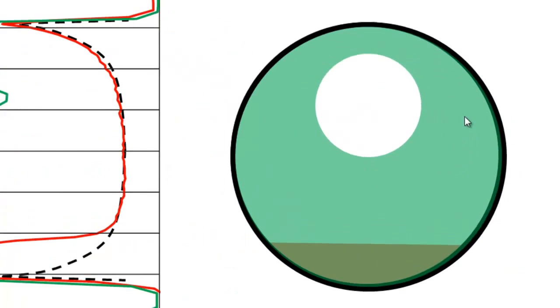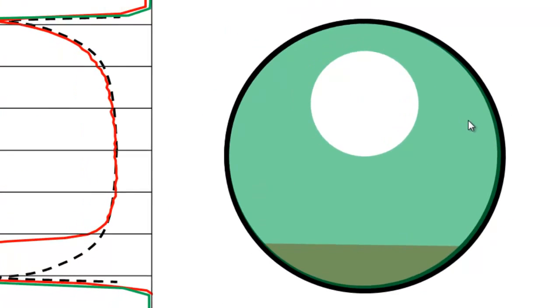In other words, the header was plugged, just as the plant suspected. With the benefit of the scans, the plant was able to pinpoint the location and extent of pluggage, which helped to significantly reduce the amount of downtime required to remove the plug, and that was invaluable.